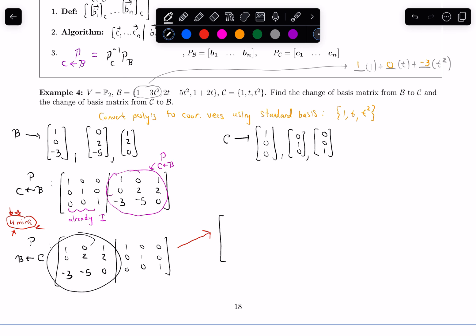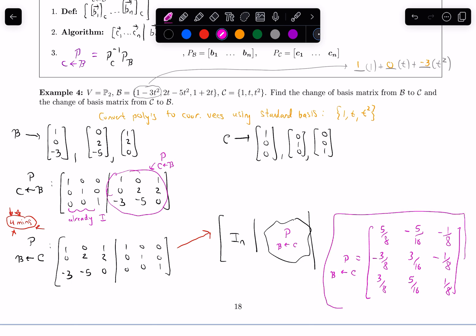But when I row reduce this, it'll turn out the left-hand side becomes the identity. So I'll get the identity, and the right-hand side will become something. And the something that it becomes is the change of coordinates matrix from C to B. And I'll just tell you what you end up getting. It turns out that that change of coordinates matrix from C to B ends up being, we'll get 5 over 8 and then negative 5 over 16, negative 1 over 8 up top. So those are the entries in the top row. In the next row, I'll get negative 3 over 8, 3 over 16, and then negative 1 over 8. In the last row, I'll get 3 over 8, 5 over 16, and then 1 over 8. And there we have it. That's my change of coordinates matrix.